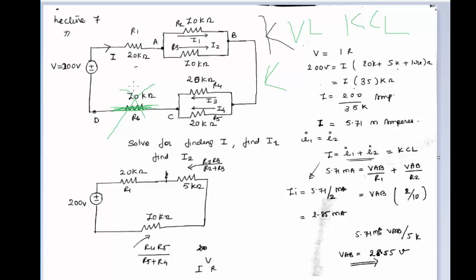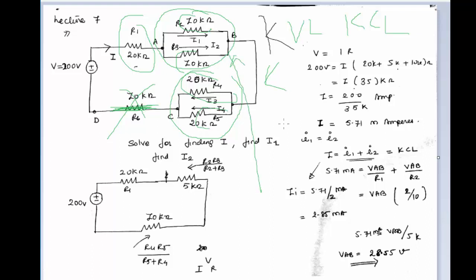There is a resistance R1 which is 20 kilo ohm. The full circuit is in parallel with R2 and R3, both 10 kilo ohm each. Again, this full circuit is in parallel with R4 and R5, both having 20 kilo ohm. First, you can apply the law for the parallel circuit.